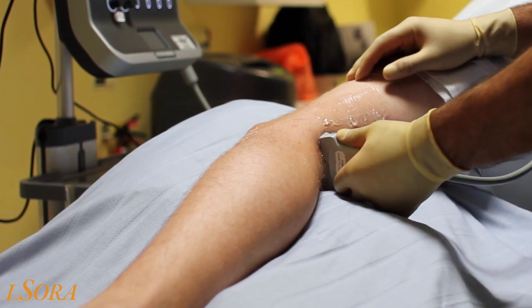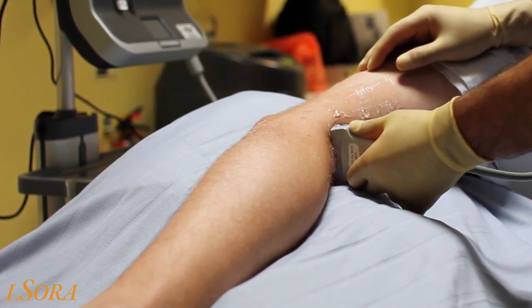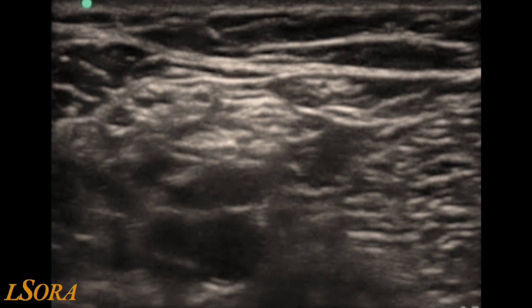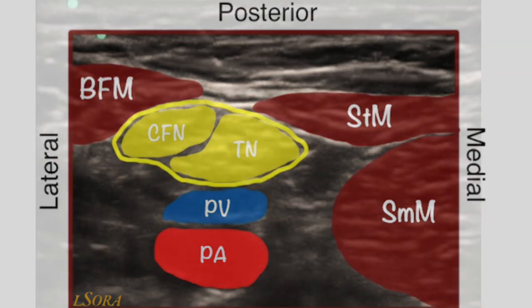A high-frequency linear probe is placed in the area behind the popliteal fossa. If you look at the image here, superficially at the top of the screen, you will see skin and subcutaneous tissue. To the left-hand side, or the lateral part of the patient image, you will see the muscle bulk made up of biceps femoris. To the right-hand side, you will see the muscle bulk made up of the semitendinosus and semimembranosus muscles.